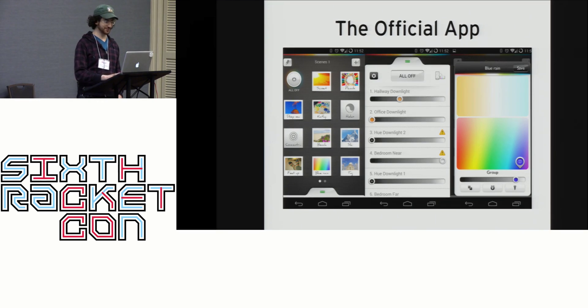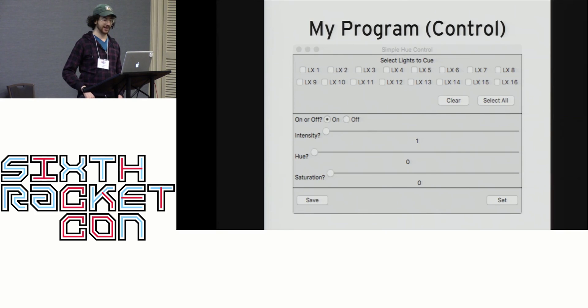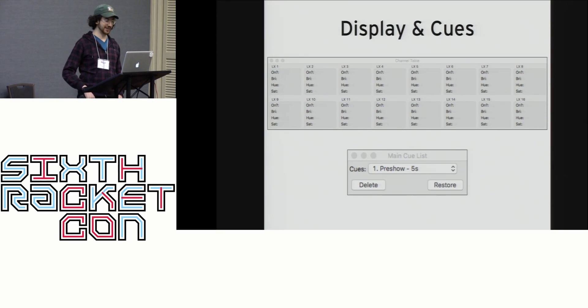I wanted to do something more like this. At first, I used Apple scripts executing curl commands, but it was really slow. So I started making my own program in Racket, simple hue control. A compact interface window that allows precise control over attributes. Another window that displays the state of each light, conceptualized as a channel, something I'll get back to later. And a window to run cues, specific lighting states that can happen over specified times.